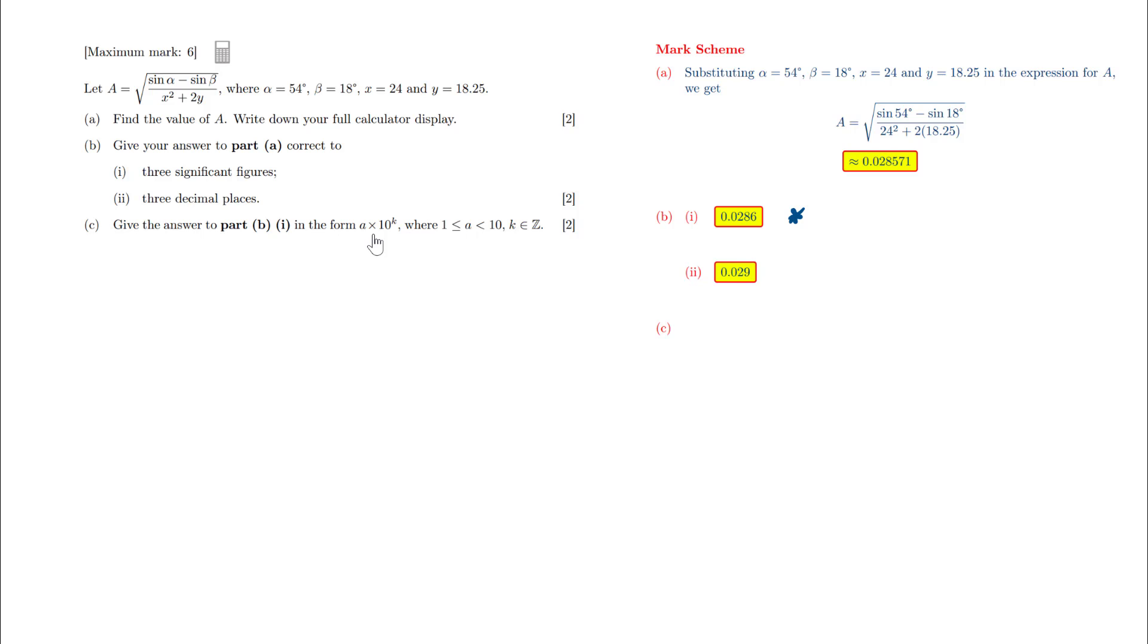IB exam questions don't actually say the words scientific notation, but that's what this whole part means. A times 10 to the K, where A is a number between 1 and 10, and K, which is the power,